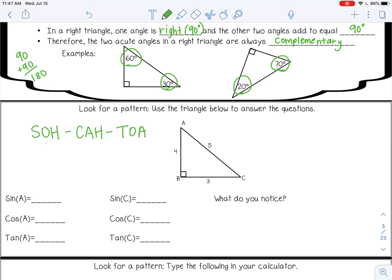So sine is opposite over hypotenuse. So if we're looking at angle A, this is opposite, and this is the hypotenuse. So 3 over 5. Cosine is adjacent over hypotenuse. So if I'm looking at angle A, 4 is adjacent, and 5 is still the hypotenuse. And then tangent is opposite over adjacent. So 3 over 4.